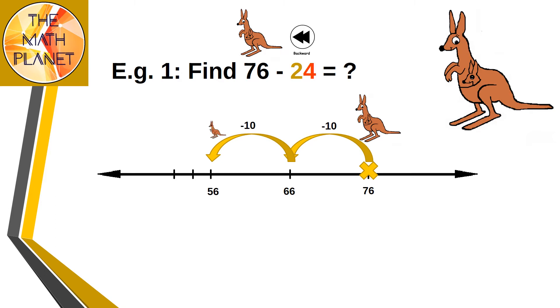Next, I will subtract the ones. So I will subtract 2 ones to reach at 54, then 2 more ones to reach at 52. So my destination point is 52, which is the difference.